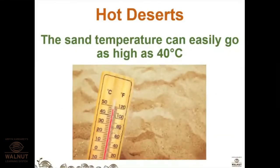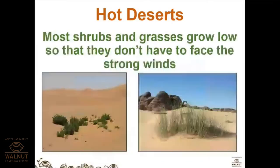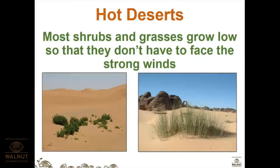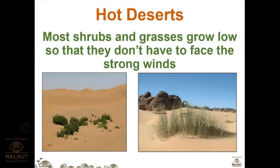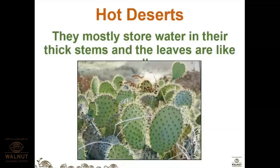The temperature in the Sahara is usually above 40 degrees Celsius most of the year. The sand temperature can easily reach 40 degrees Celsius. You can find varieties of acacia and palms here. Most shrubs and grasses grow low so they don't have to face the strong winds. They mostly store water in their thick stems and their leaves are like thorns.